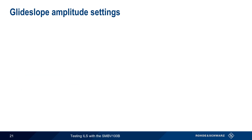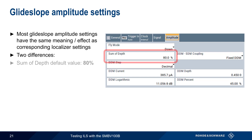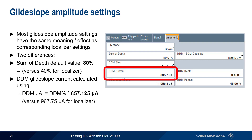Most of the other glide slope amplitude settings on the SMBV have the same meaning or effect as their localizer counterparts. There are, however, two differences to note. First, the default sum of depth for glide slope is 80%, compared to the default 40% in localizer. Second, the DDM glide slope current is calculated using the scaling factor 857.125 microamperes, whereas in localizer the scaling factor was 967.75 microamps. Overall, there is a great deal of similarity between configuring glide slope and localizer signals on the SMBV.